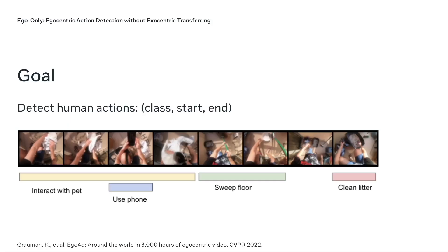The primary goal of our research is to detect and categorize human actions in egocentric videos. Given a long input video, our model identifies temporal segments where specific human actions occur and classifies them into relevant categories.